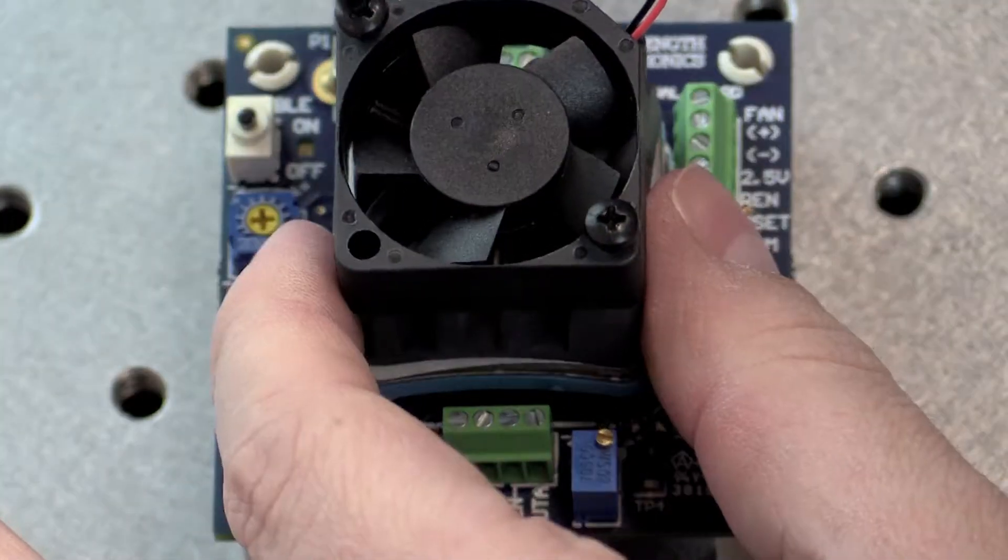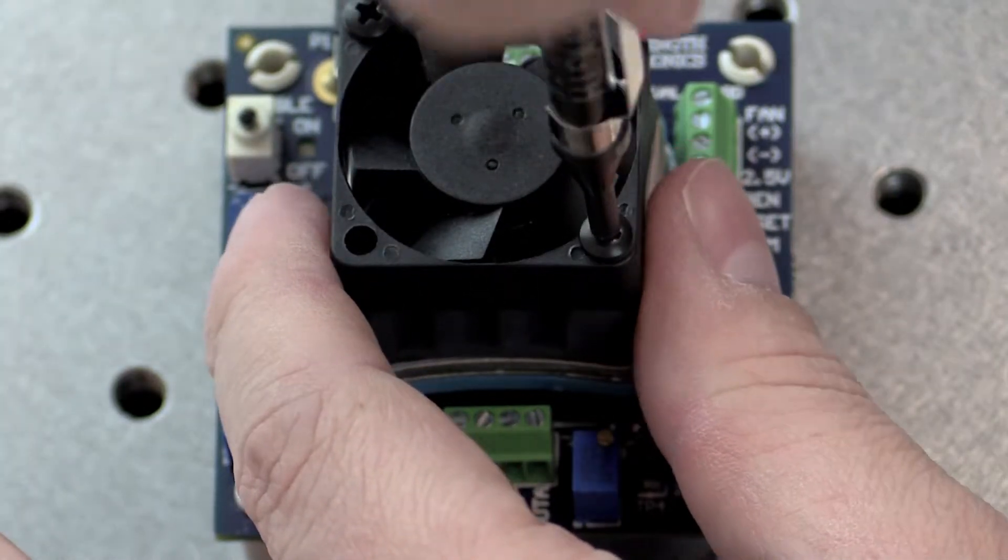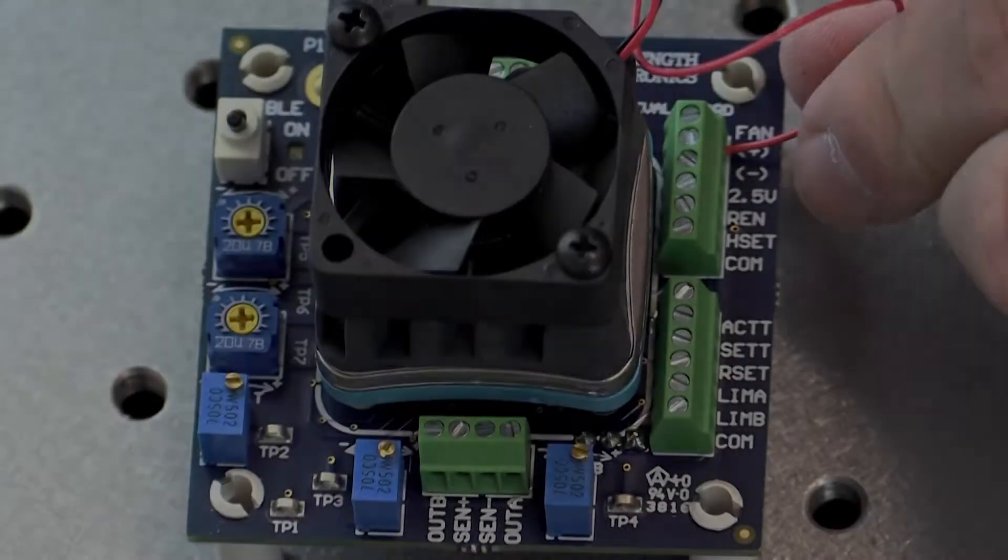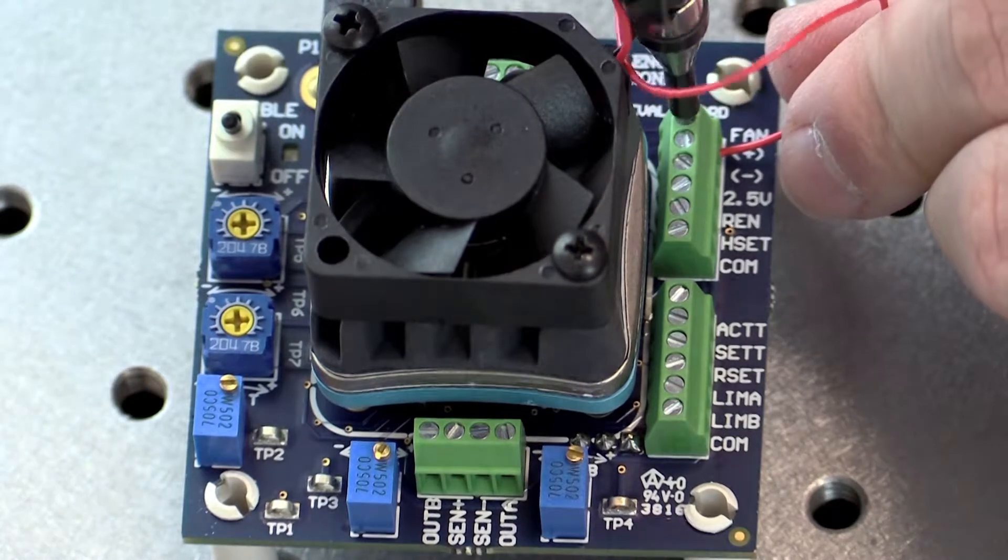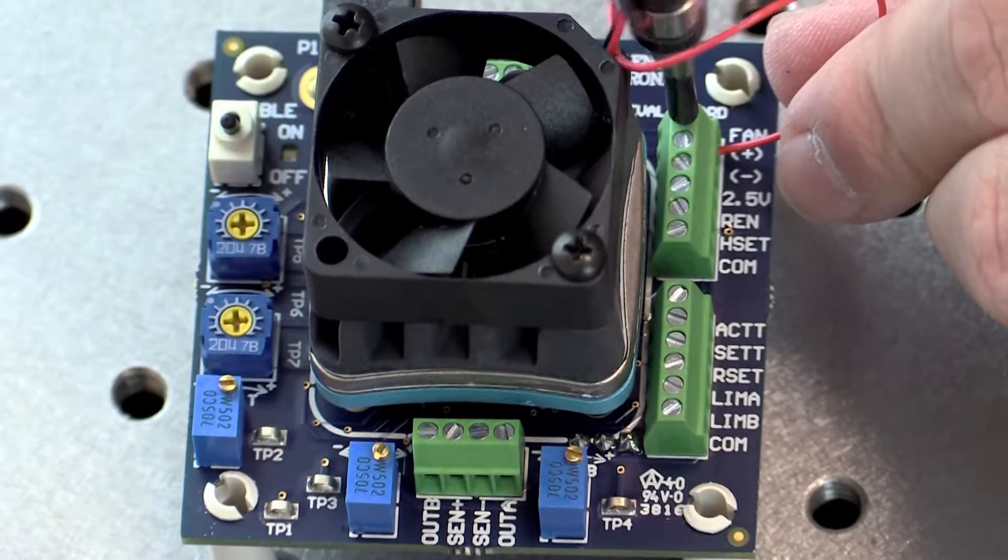Now attach the WEV301 thermal solution kit and connect the fan leads to the plus and minus fan positions on the terminal block. Secure with a small flat head screwdriver.